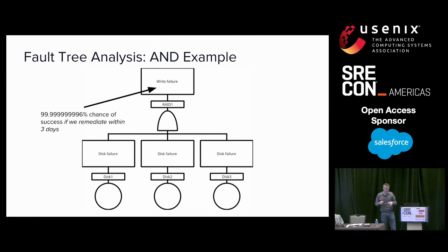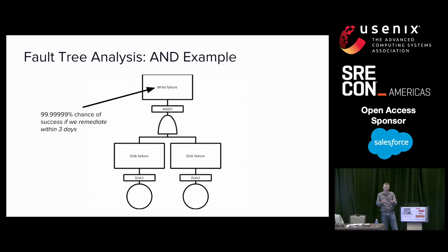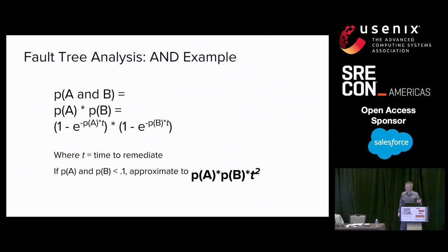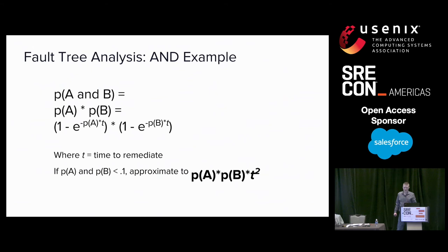If we consistently remediate within three days, our chance of success increases significantly. Instead of running RAID 1 with three disks, we can run it with one disk and still have a very high chance of success. The way we come up with the number with the remediation rate is to follow this formula. If your probabilities are less than 10%, you can multiply the probability of A by the probability of B, and multiply it by your rate of remediation by the number of probabilities you're computing with. For our remediation rate that we used before, it was 3 divided by 365.